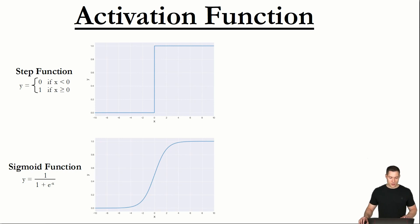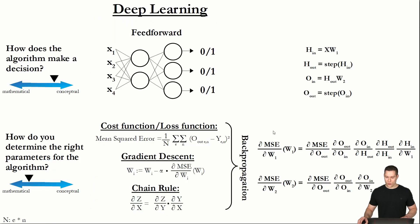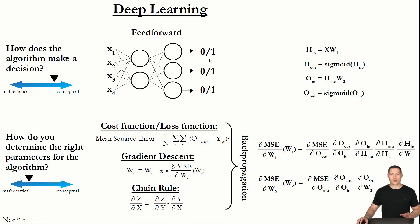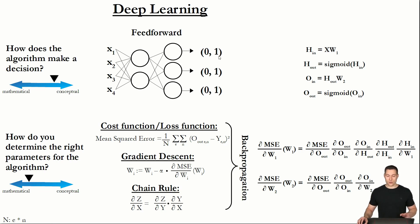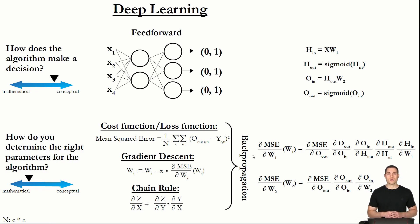The sigmoid is differentiable at all points, so this is the function we're going to use as our activation function. Going back to our overview graphic, we can now replace the step function with the sigmoid function. Accordingly, the neural network is not going to output either a zero or a one, but instead any value between zero and one (exclusive). With that, we can finally start to implement the backpropagation algorithm, which will be the topic of the upcoming video.